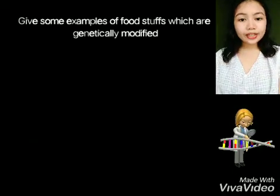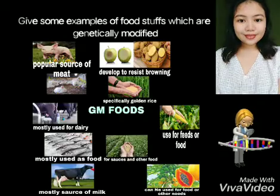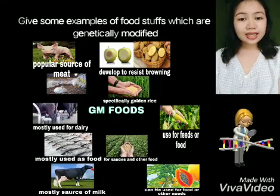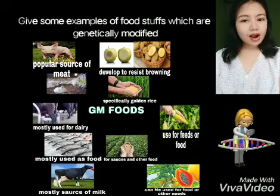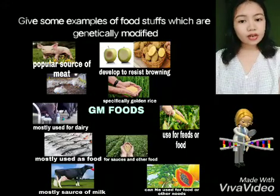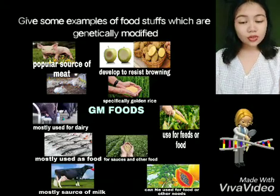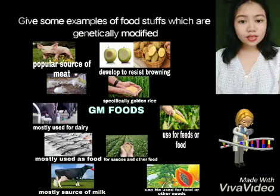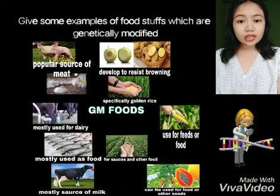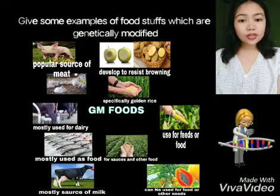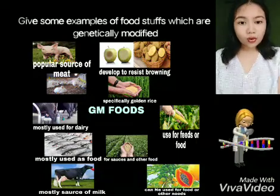For our last task, our fourth task, we have given some examples of foodstuffs which are genetically modified. Most of the crops that are usually genetically engineered here in the Philippines — the GM food available in our country — are rice, or golden rice, and corn for feed and food, which transforms the farmer's life here in our country. We also have soybean, potatoes and apples that are developed to resist browning, and also papayas. For the animals which are genetically modified here in the Philippines, mostly these are animals used for dairy or meat that have really become part of our everyday life.